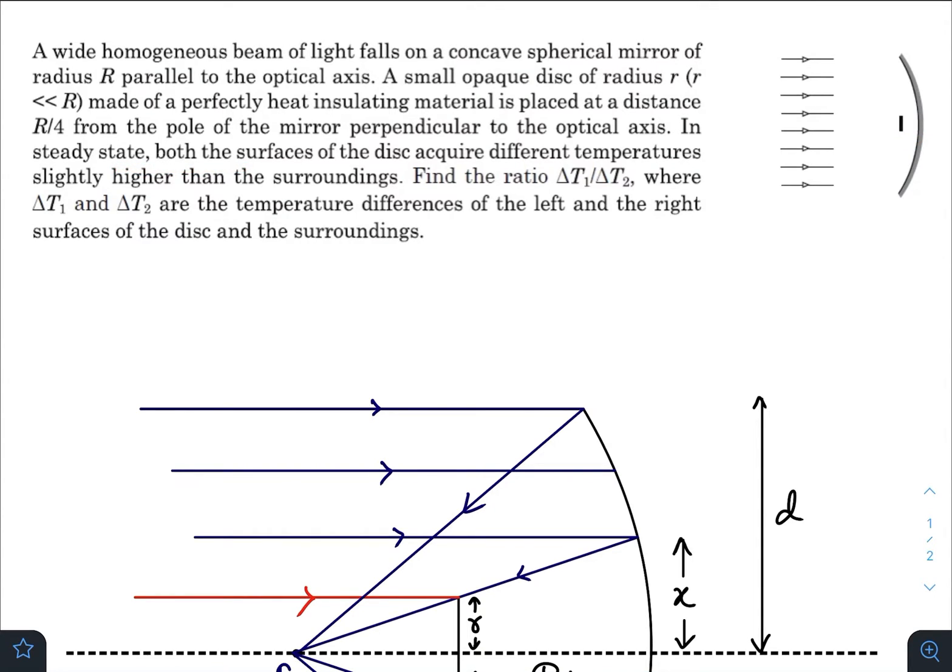So this gap is r by 4. In steady state, both the surfaces of the disc acquire different temperatures slightly higher than the surroundings. Find the ratio del t1 by del t2 where del t1 and del t2 are the temperature differences of the left and the right surfaces of the disc and the surrounding.